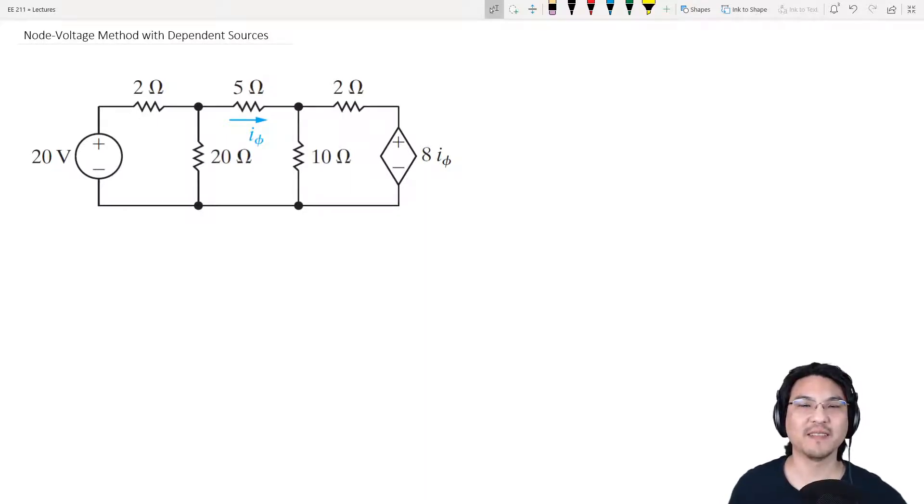Hey everybody. Let's try the node voltage method, but this time, what if you have dependent sources? For example, this is an independent voltage source, but this is a dependent voltage source. The voltage here is this, but note that it depends on the current here. So let's give this a try.